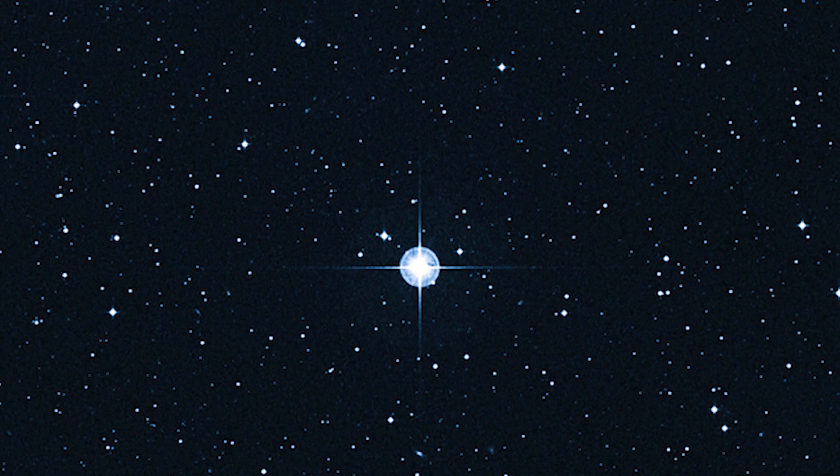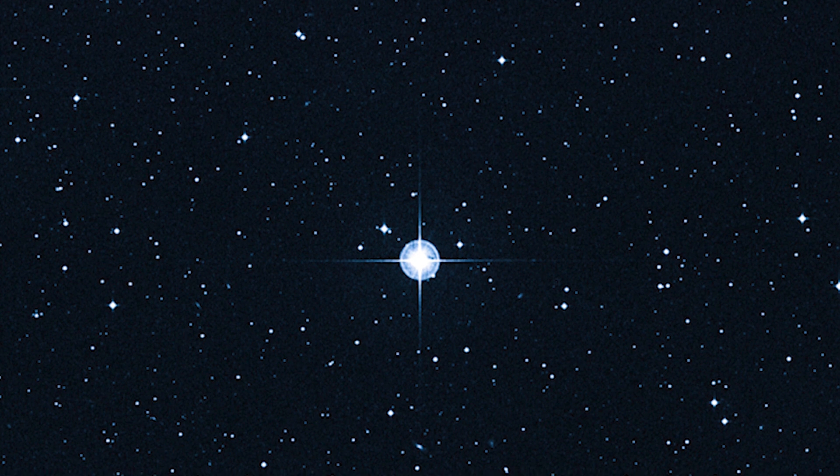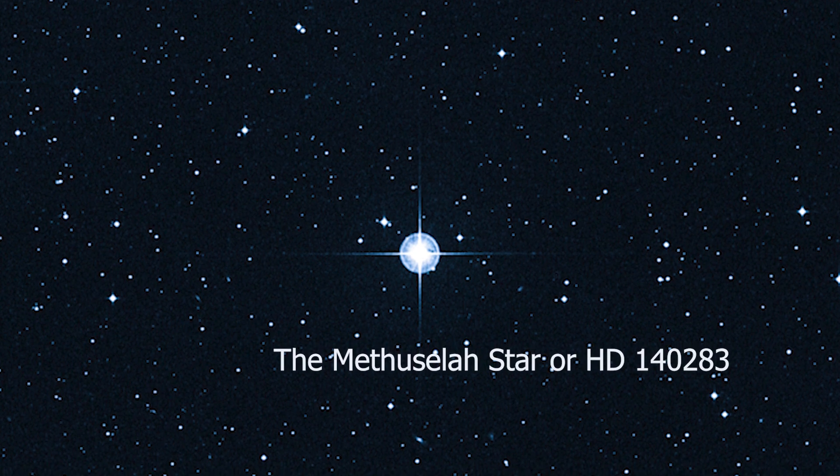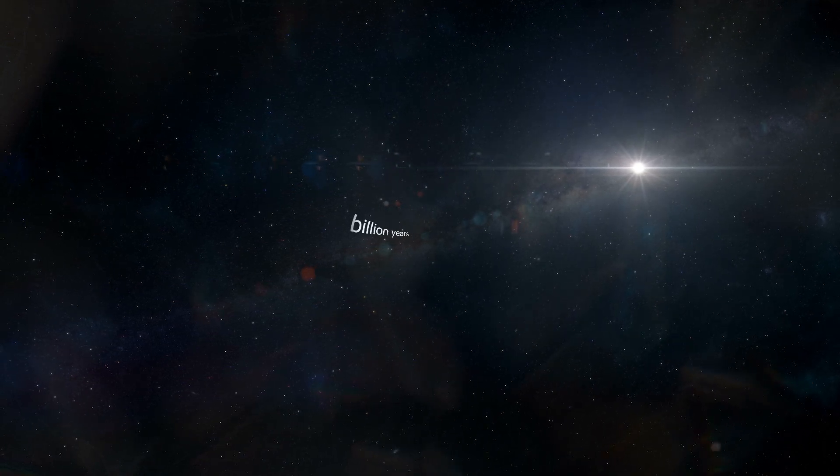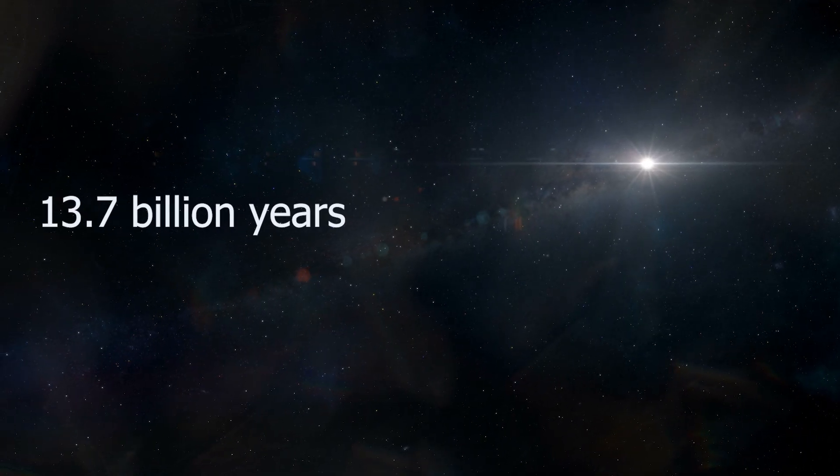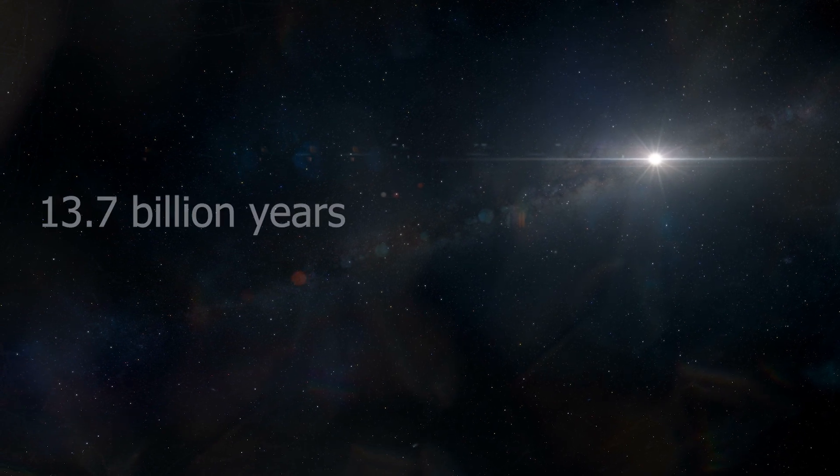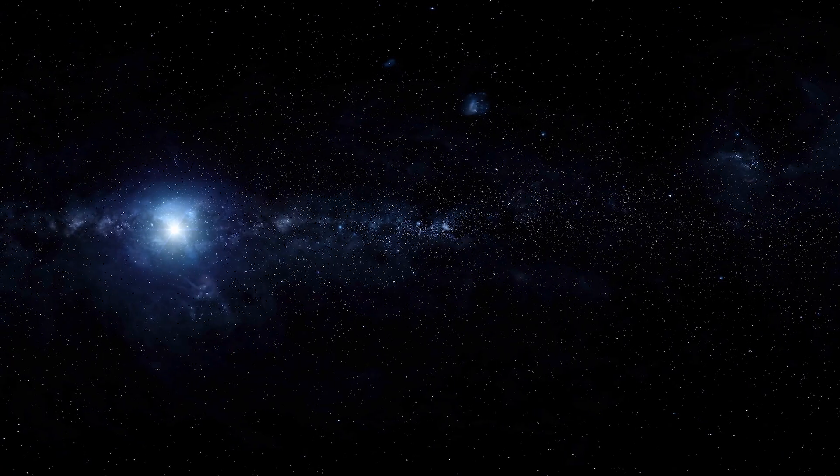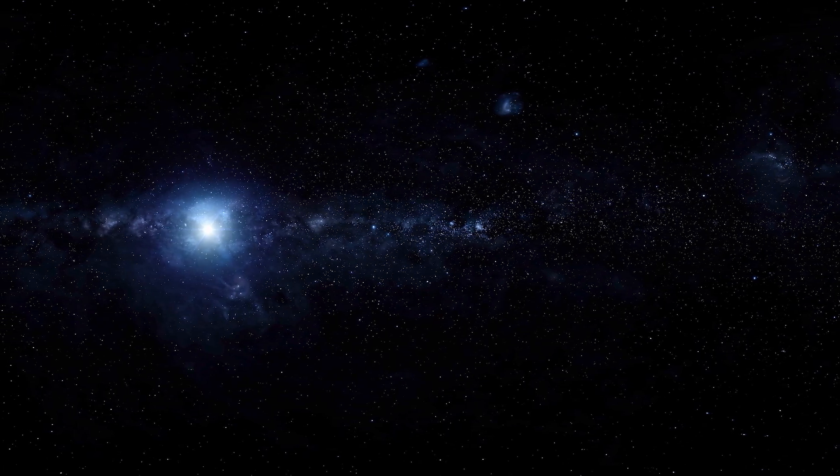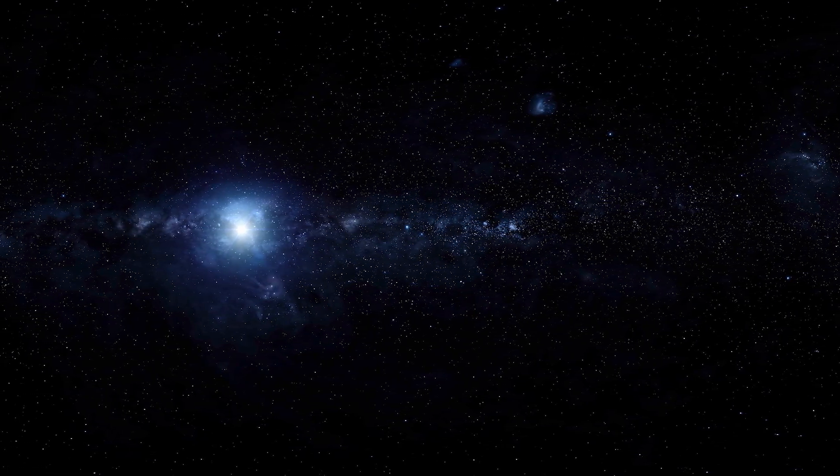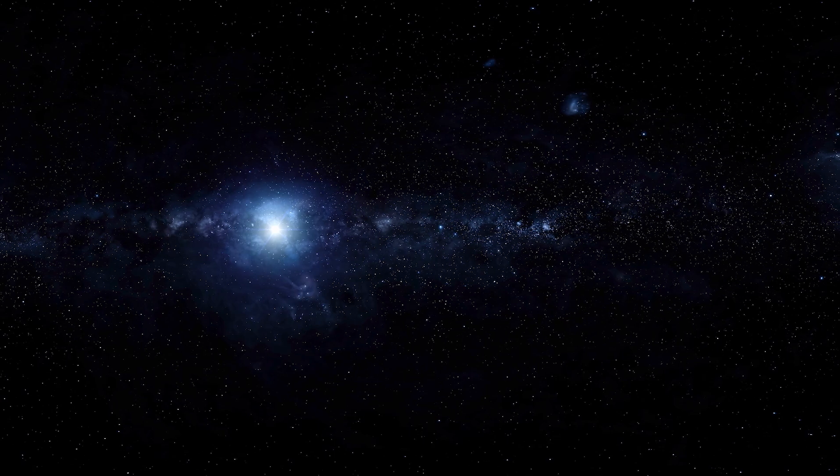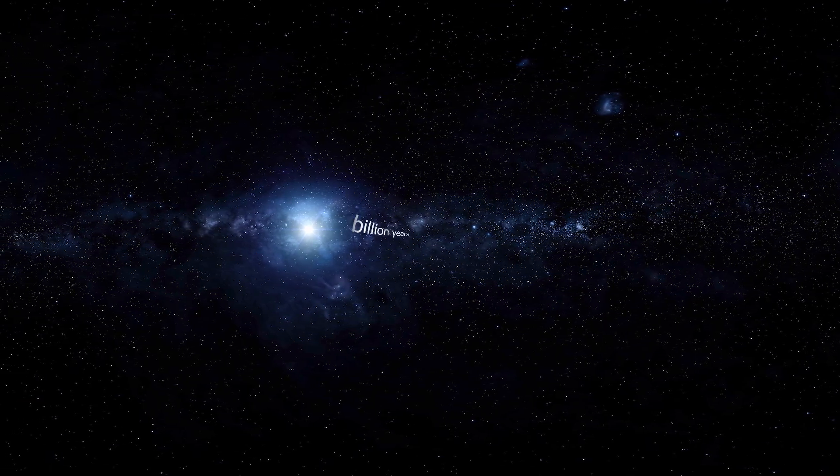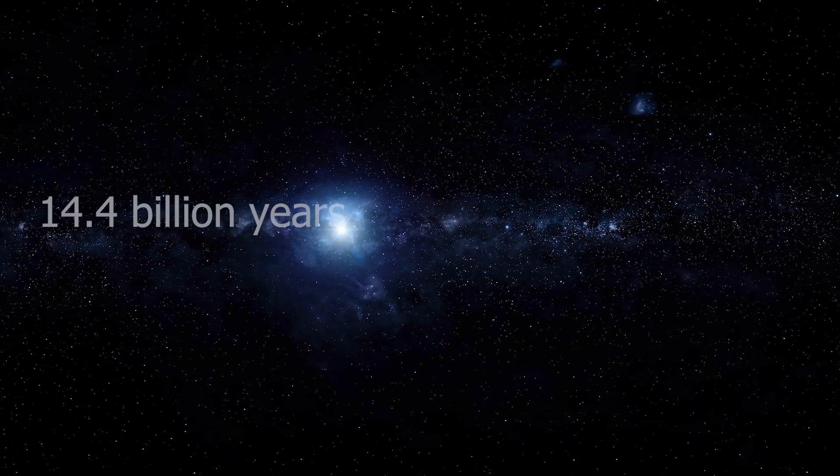For example, the oldest star we've found in the universe is the Methuselah star. Scientists have estimated its age to be 13.7 billion years, with an uncertainty of 700 million years. If the Methuselah star is younger than the age of the universe, that's fine. But the uncertainty says that it can be as old as 14.4 billion years.